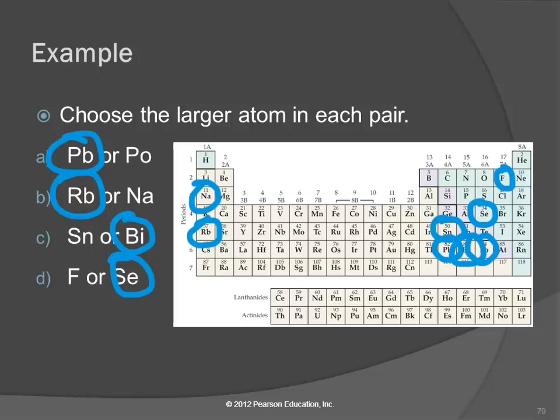Now questions like those, I wouldn't ask you letter c, I wouldn't ask you to gauge between opposing trends, but the other three, those would be perfectly good exam questions. Or give you three or four elements and ask you to arrange them in order of increasing atomic size or decreasing atomic size. Any questions about atomic size?